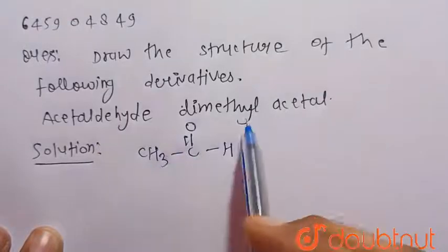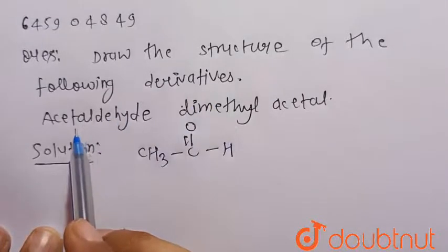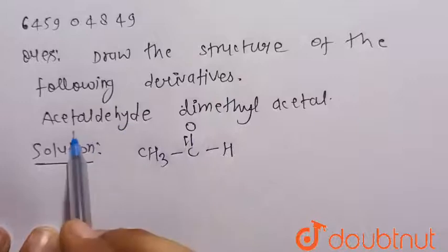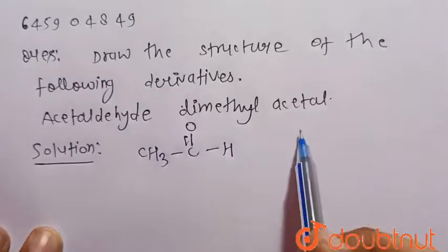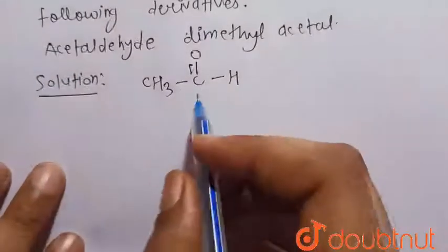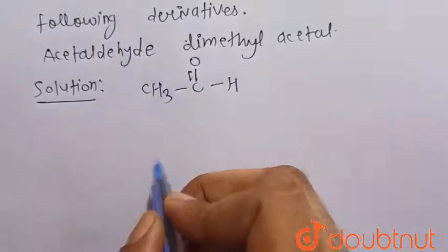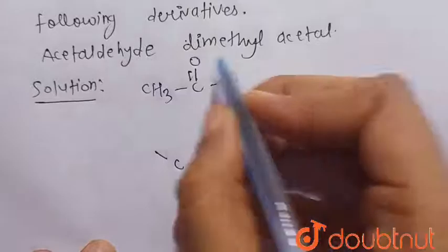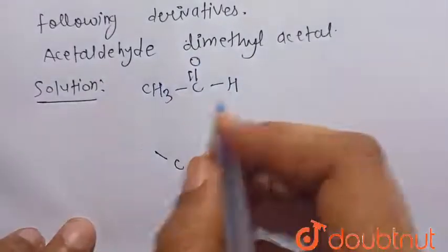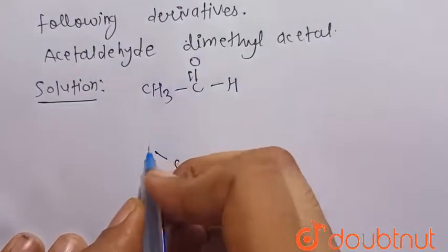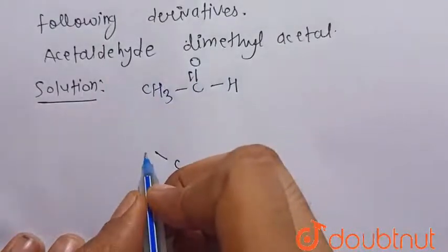So we have to write the structure of the derivative that is acetaldehyde dimethyl acetal. So at the C double bond OH, at the place of C double bond OH, here dimethyl acetal is given. So two dimethyl acetal will attach at the place of C double bond OH.